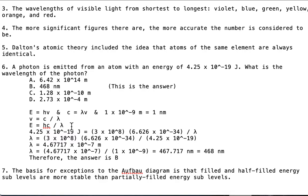4.25×10^-19 joules is the energy. That's the speed of light, and this is h, Planck's constant, and λ is the wavelength that we want to find.